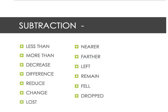Next up, we have some subtraction keywords. Words that you might see are: less than, more than, decrease, difference, reduce, change, lost, nearer, farther, left, remain, fell, and dropped. Remember, don't just look for these words — follow the steps I told you at the beginning. These key words are just extra help to figure out what type of operation you need to do in the word problem.